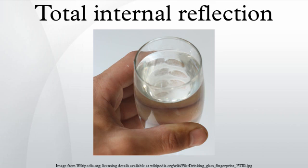An important side effect of total internal reflection is the appearance of an evanescent wave beyond the boundary surface. Essentially, even though the entire incident wave is reflected back into the originating medium, there is some penetration into the second medium at the boundary. The evanescent wave appears to travel along the boundary between the two materials.